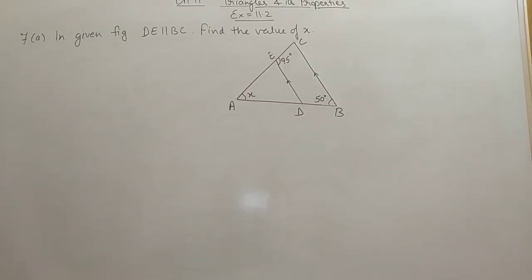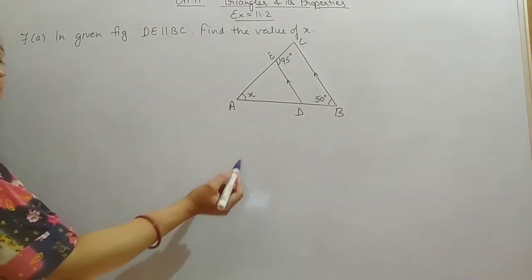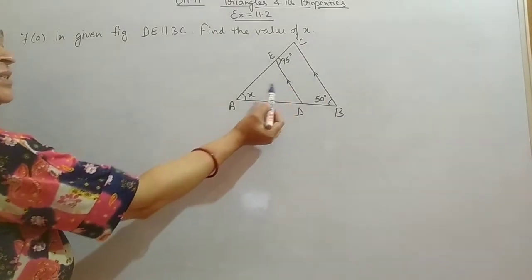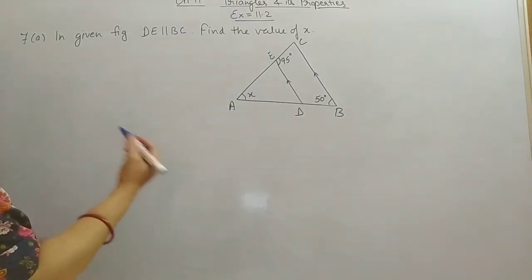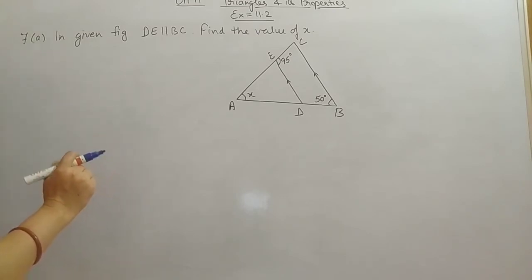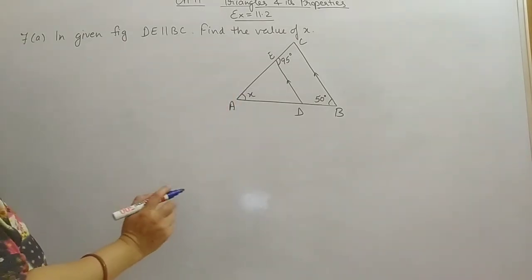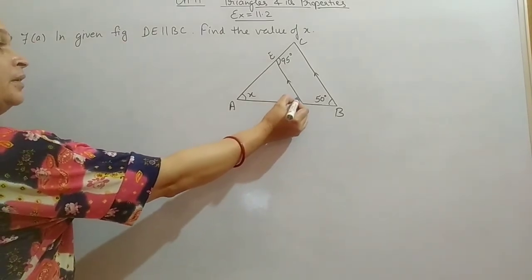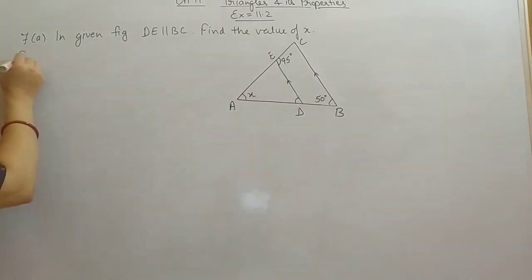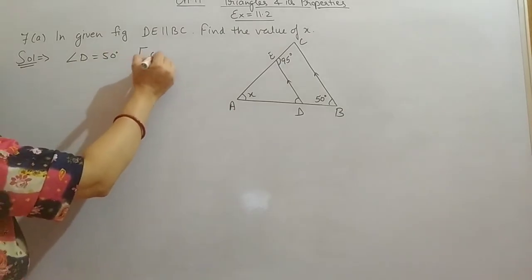Next is question 7, first part. In the given figure, DE and BC are parallel to each other — the same type of arrows indicate the two lines are parallel. We have to find the value of X. Using the properties of parallel lines, angle B will be equal to 50 degrees by corresponding angle property.